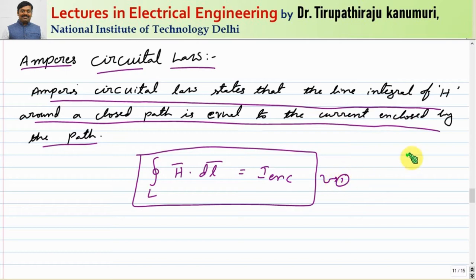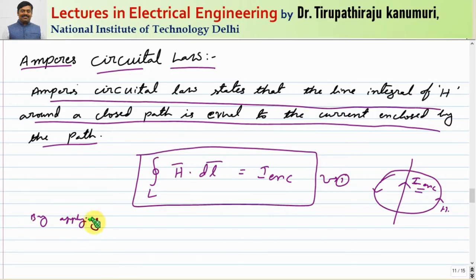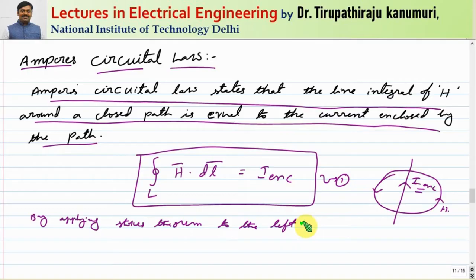Let us take this as equation number one. For example, let us assume current is passing through some particular conductor and I am taking a closed path. The closed line integral of whatever H is passing along this line will be equal to the current enclosed within it. Let us assume this I equals the current enclosed. I can find this by applying Stokes theorem to the left-hand side.